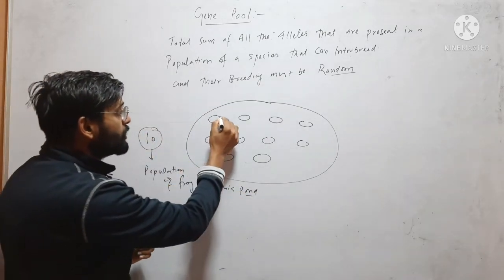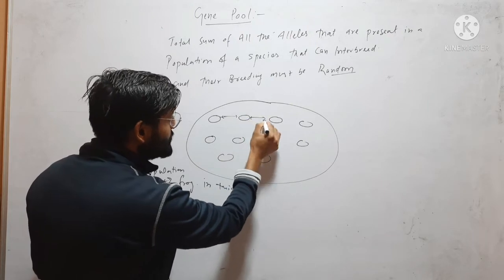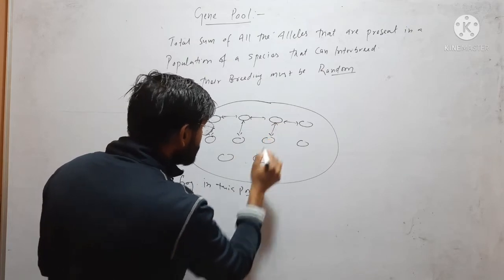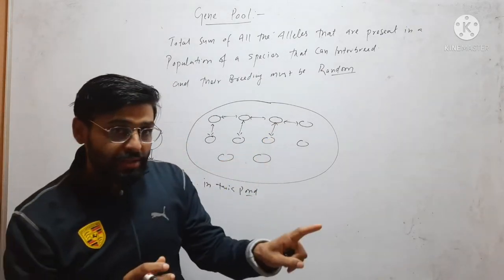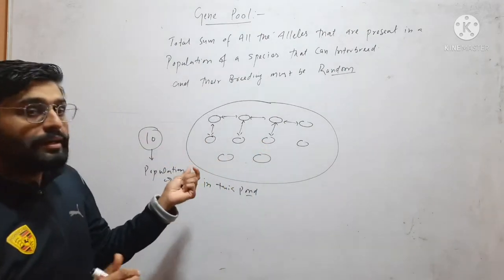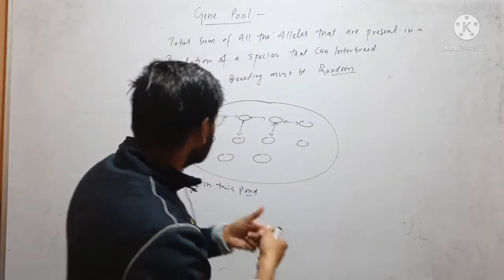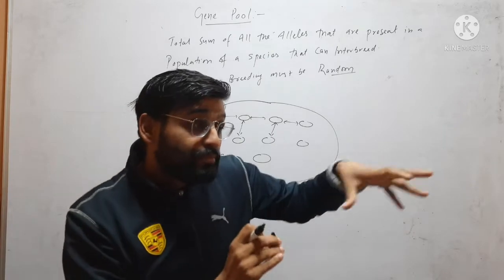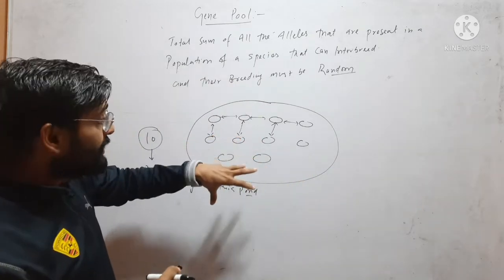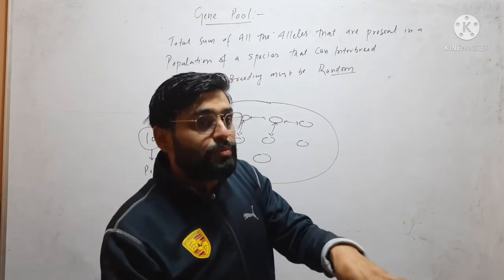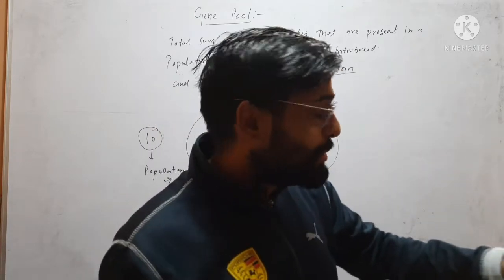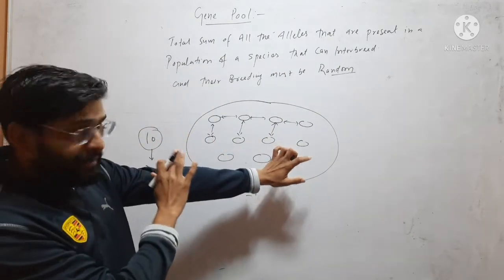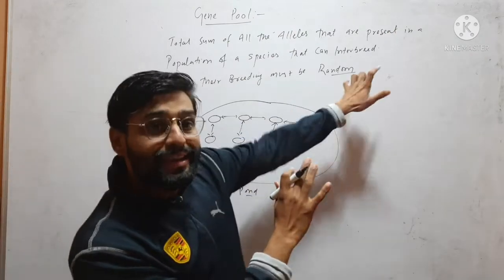All these frogs can interbreed with each other, and their breeding is random, meaning every frog has a chance. Every male frog here has a chance to breed with a female frog — this is called random breeding. Every male has an equal chance to interbreed with another female. That is called random breeding.